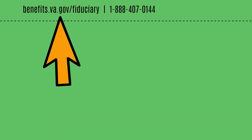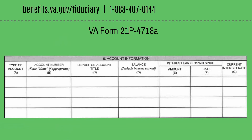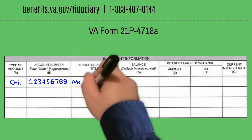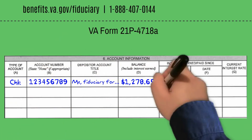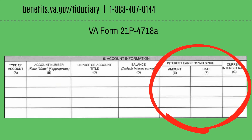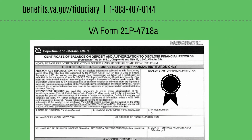A bank teller should then complete this section with the type of account — in this case a checking account — the account number, depositor account title, and the balance of the account. If this is an account which collects interest, the bank should also complete this section.